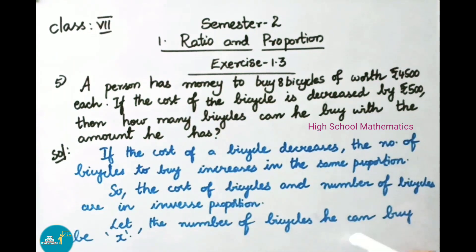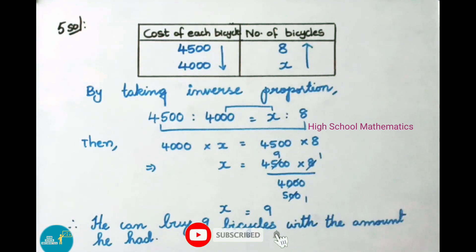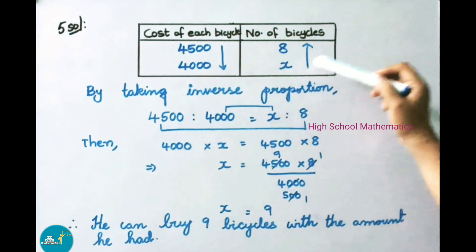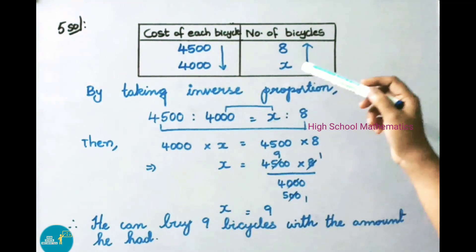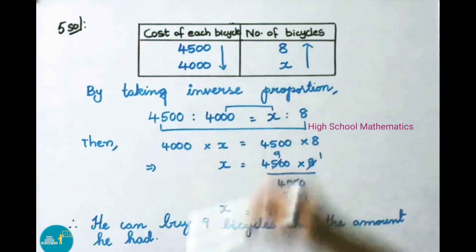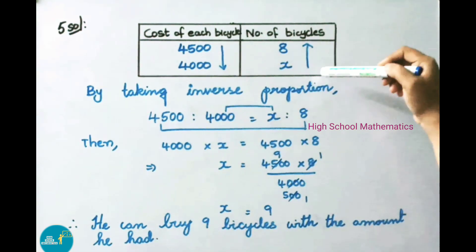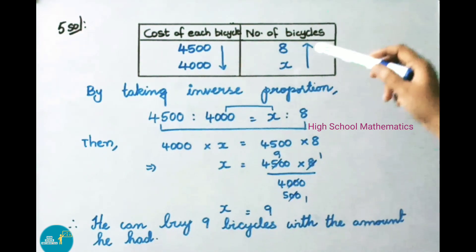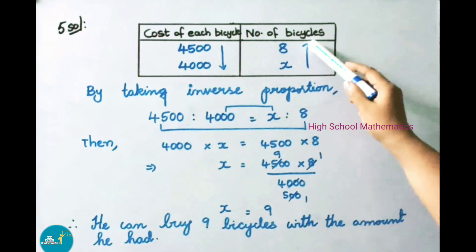Let the number of bicycles he can buy be X. Now let us see the inverse proportion in table form. We have taken cost of each bicycle and the number of bicycles. If the cost of each bicycle is Rs. 4,500, he wants to buy 8 bicycles. If the cost of each bicycle is reduced by Rs. 500, that is each bicycle costs now Rs. 4,000, then how many bicycles can he buy? We are going to find here. Cost of each bicycle is going to decrease, so the number of bicycles he can buy increases.